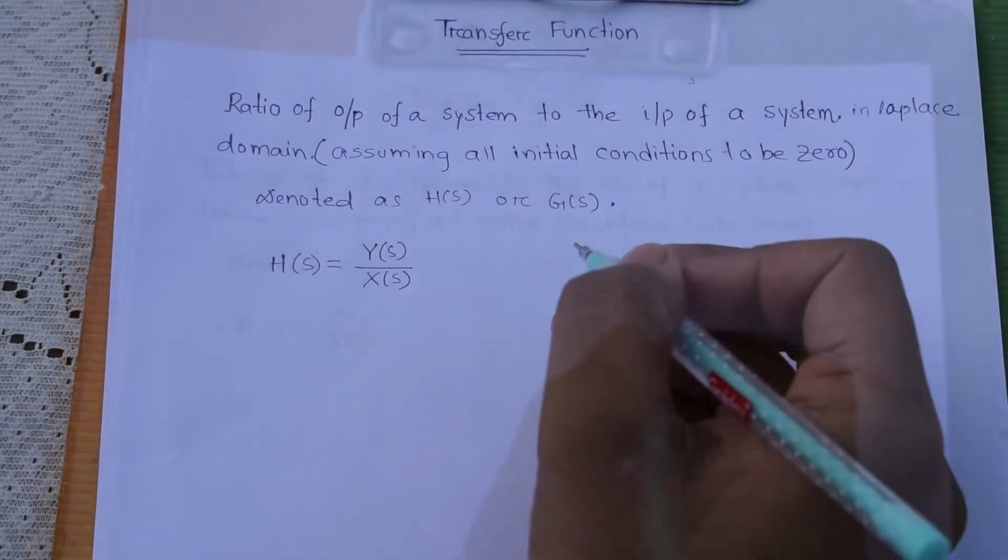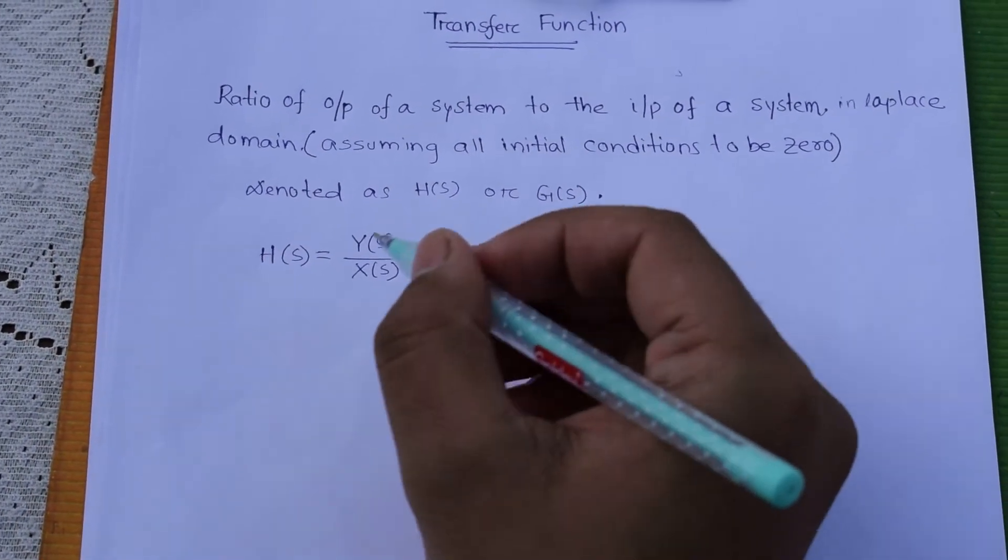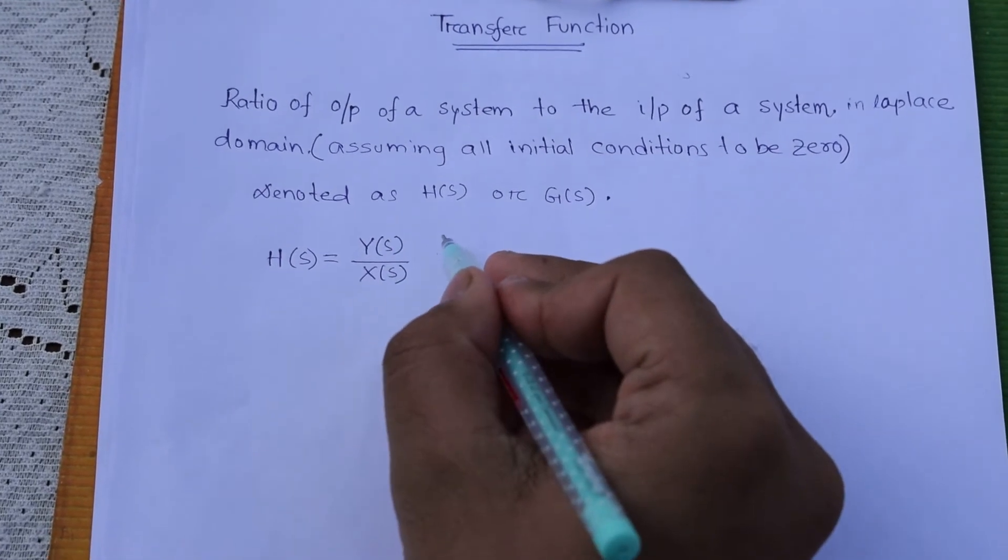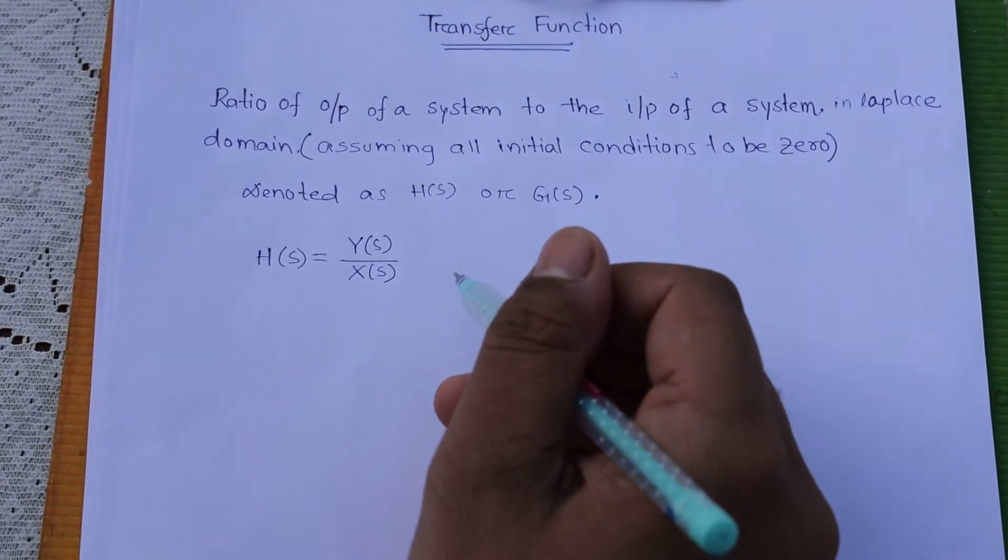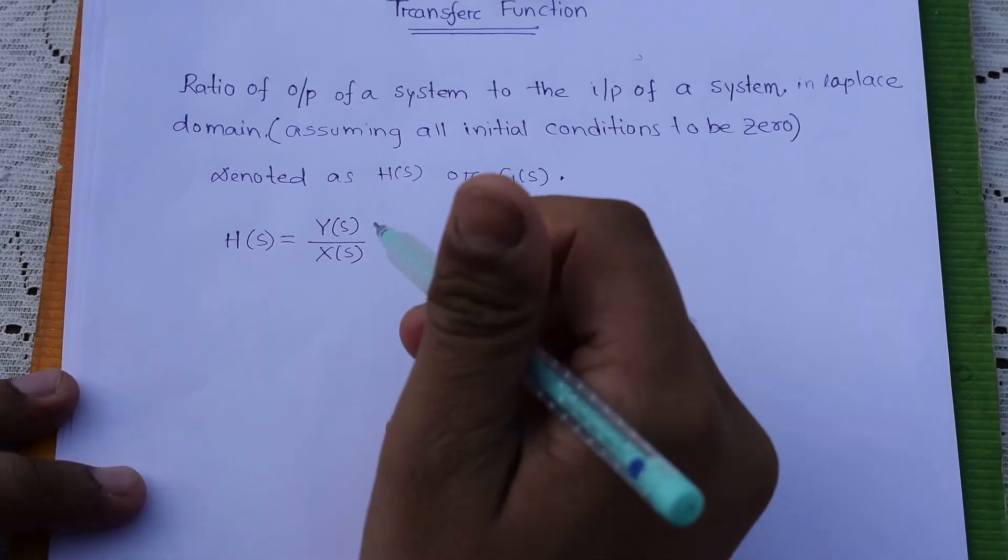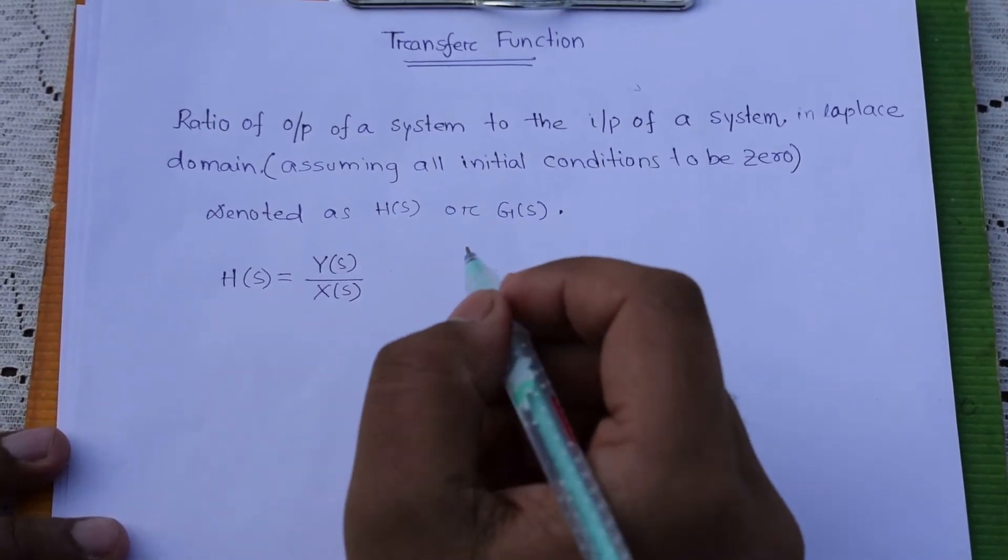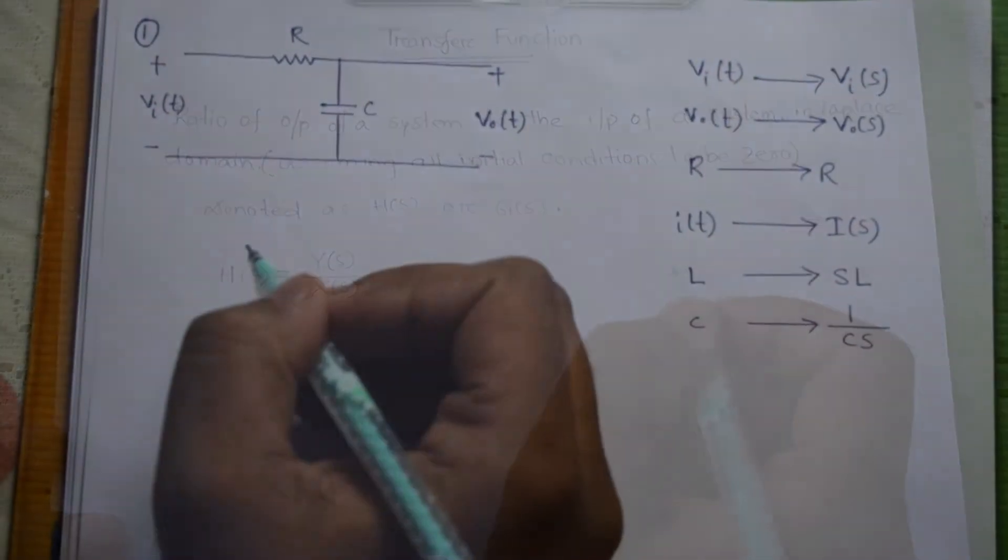Now the expression of transfer function is H(S) equals to Y(S) by X(S). Y(S) is the output in Laplace domain and X(S) is the input in Laplace domain. One more thing is that for writing the transfer function, the system must be a linear time invariant, else we cannot find the transfer function. Let us take some example.